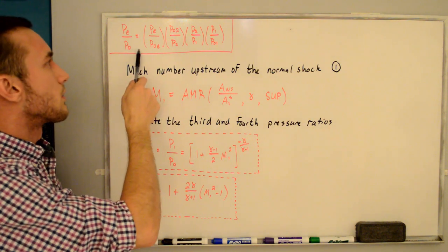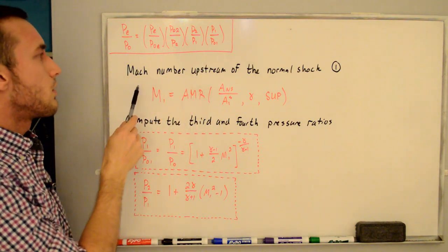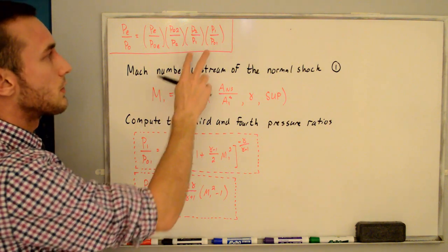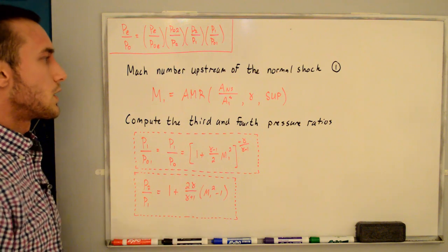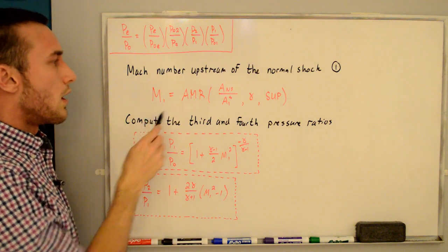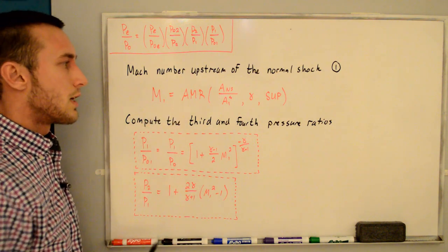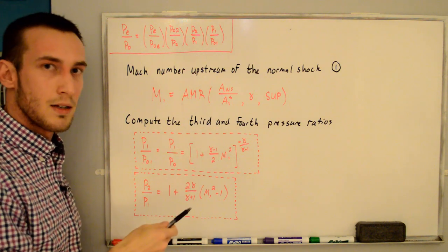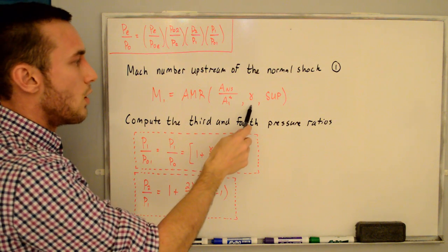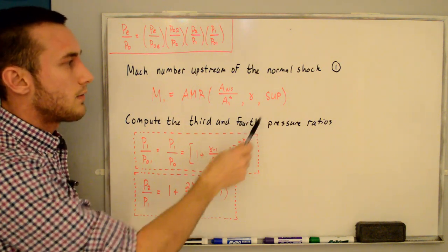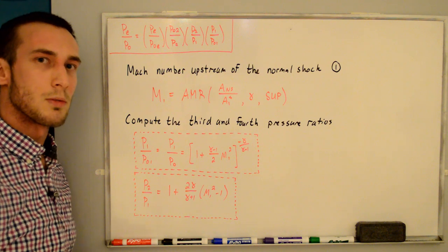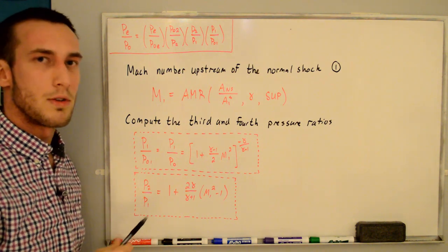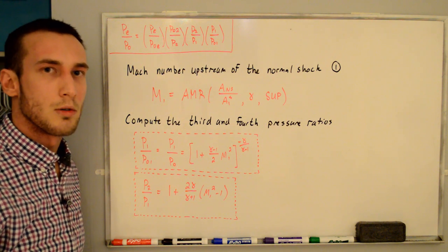The first thing we want to do is solve for the upstream Mach number M1 using the area-Mach number relation, with the shock area ratio set at the beginning and the known gamma. We take the supersonic root because upstream of the normal shock the flow is supersonic.